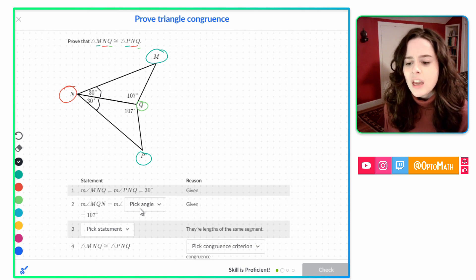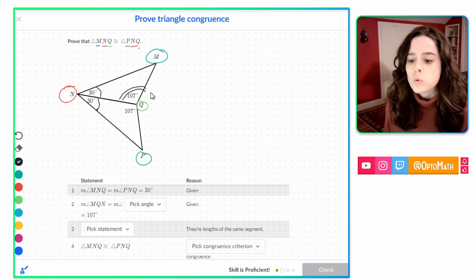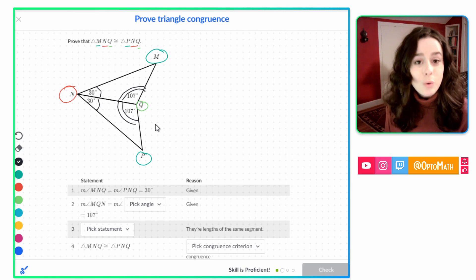So we have to pick the angle that is also 107 degrees. We are given number two, angle MQN. So MQN, that's 107. Let's just mark it twice. That has to be congruent to this other 107.